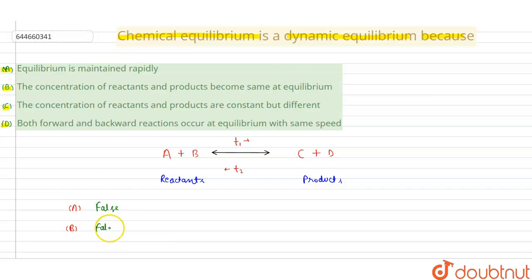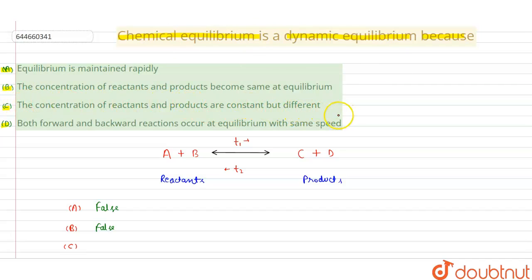Option C says: the concentration of reactants and products are constant but different. This line is correct, but this is not the reason for why chemical equilibrium is a dynamic equilibrium. So even though the statement is correct, it does not answer the question, making option C also false.